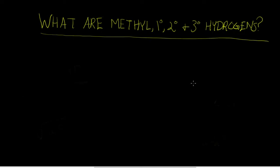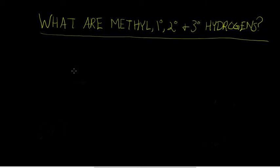In this video, we're going to be going over what methyl, primary, secondary, and tertiary hydrogen atoms are, because this classification becomes pretty important in understanding reactivity of alkanes to halogenation — that is, free radical halogenation — as well as reactions of haloalkanes, so that's the nucleophilic substitution and elimination.